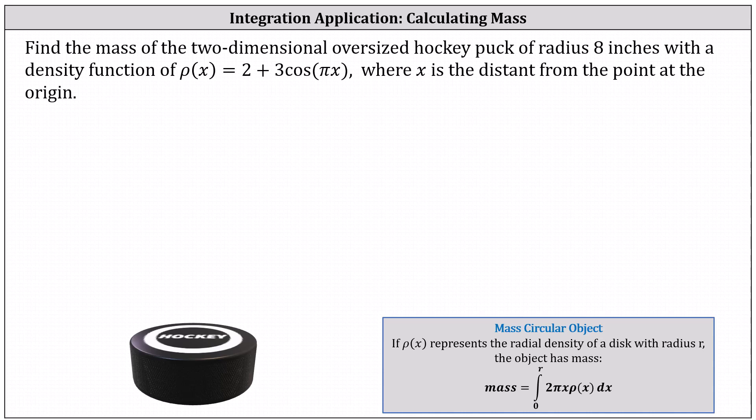Find the mass of the two-dimensional oversized hockey puck of radius eight inches with a density function of ρ(x) = 2 + 3cos(πx), where x is the distance from the point at the origin.